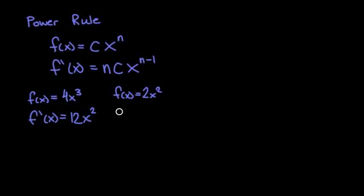Or for 2x squared, we'd have a derivative that is 4x. So you just subtract 1 from 2 up here so it's x to the first power, or just x, and then 2 times 2 is 4.